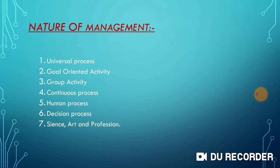Fourth, continuous process — management is a continuous process. Fifth, human process — management is done by human beings, so it is a human process. Sixth, diligence process — in management, the manager has to decide the objectives, planning, etc.